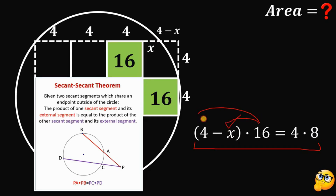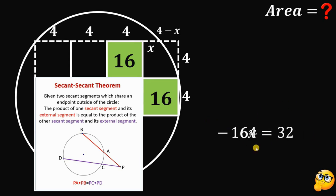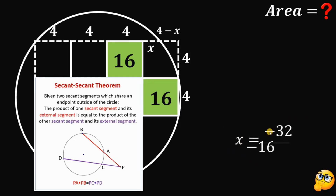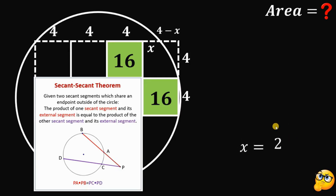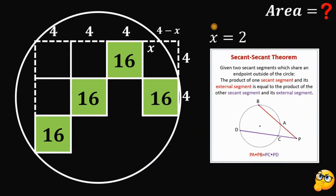Using this equation, let's distribute the 16 to 4 and negative x. We get 64 minus 16x equals 4 times 8, which gives us 32. Subtracting 64 from both sides gives 32 minus 64, which is negative 32. Dividing both sides by negative 16, x equals negative 32 over negative 16, which is positive 2. So using the secant-secant power theorem, x equals 2.